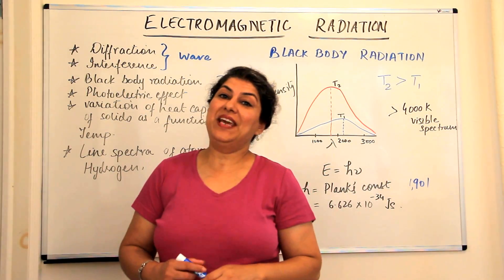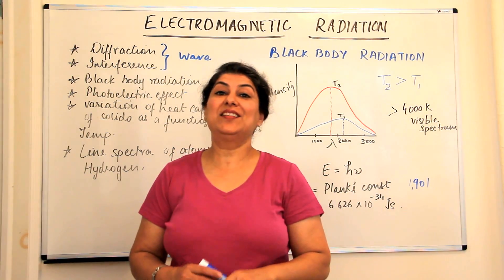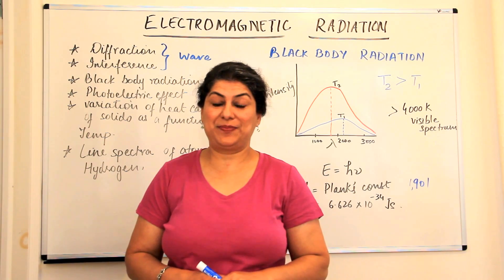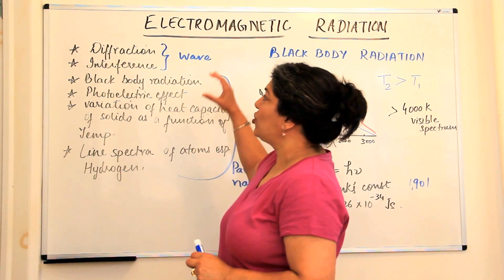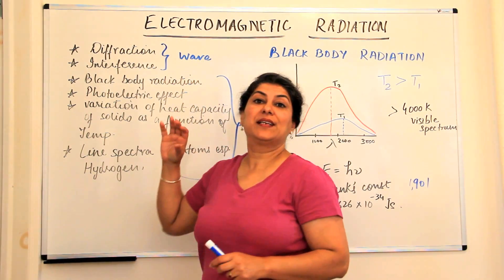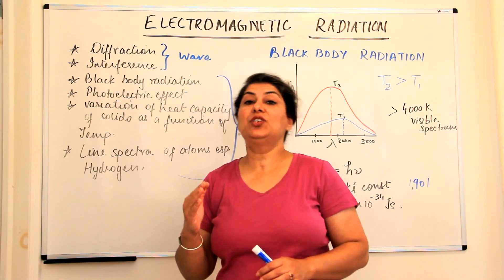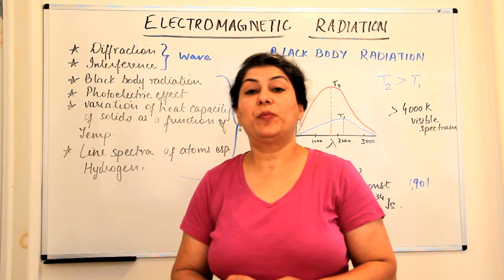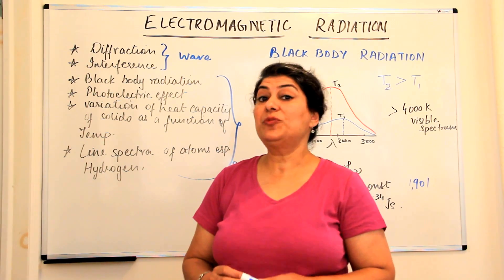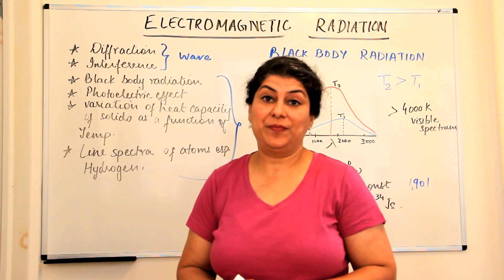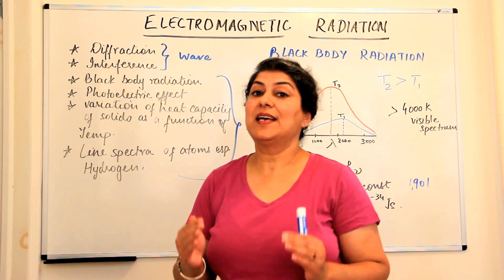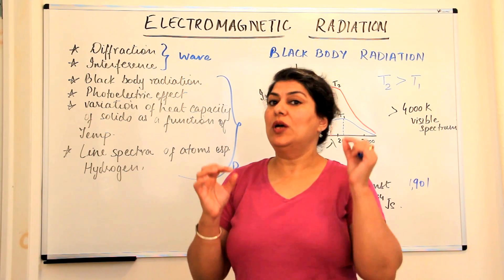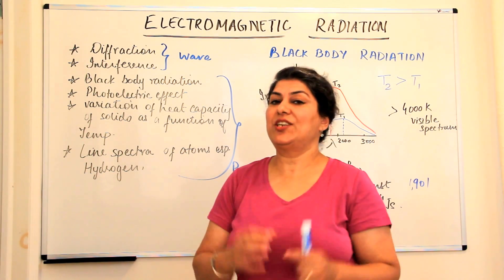We have been discussing the dual nature of electromagnetic radiations. Some properties of electromagnetic radiations can be explained by their wave nature, but some properties cannot be explained by the wave nature, and hence the particle nature of electromagnetic radiations was also suggested.